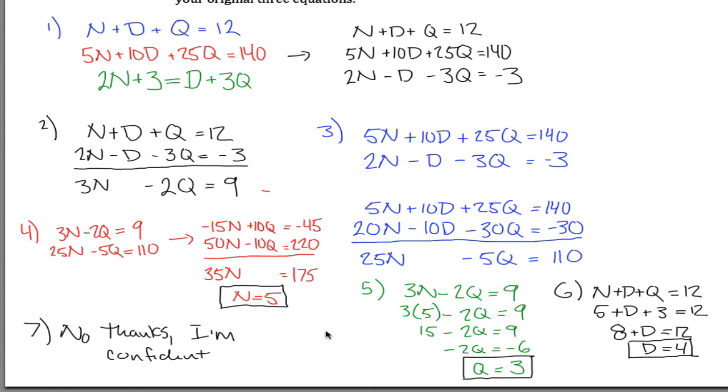So I guess I'm all done with this problem, I have my answer here, that in my couch there's 5 nickels, 4 dimes, and 3 quarters, so that is the end of this problem.